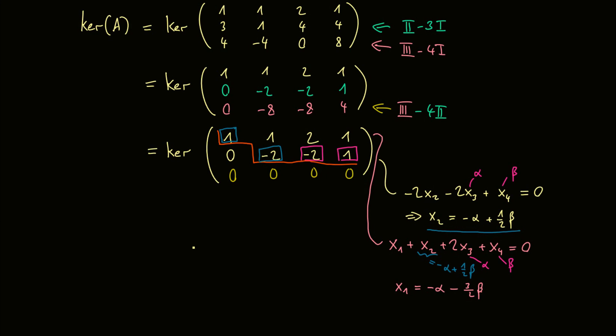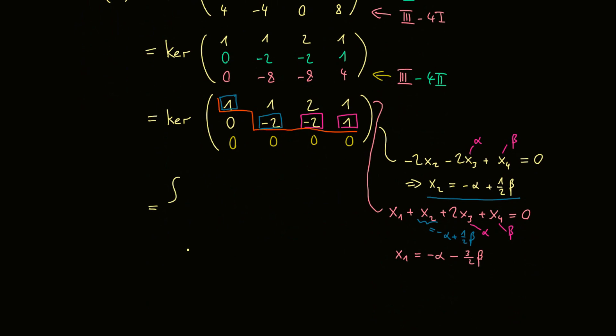Of course, this is the solution set of our system of linear equations given by Ax equals to 0. So now we can just write the solution set, that is the kernel. So set brackets here, and then we have the vector. So it's minus alpha minus 3 half beta comes from the x1 component, and then we have the x2 component, it's minus alpha plus 1 half beta. And x3 and x4 were the free variables, so just alpha and beta here. And most importantly, don't forget to write alpha, beta coming from R. And this is the whole solution set, so arbitrary vector given in this form where alpha and beta coming from R.